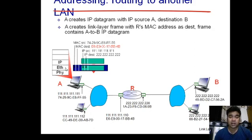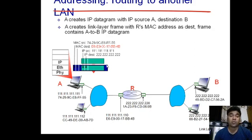Once this packet comes down to the data link layer — Ethernet is the protocol working at the data link layer for wired LANs — the data link layer needs to add a header as well as a trailer. It encapsulates a header and trailer with the packet, and this packet is converted into a frame. In the header part, the data link layer puts the network interface card's MAC address. The source MAC address is FF55, as you can see in the frame.